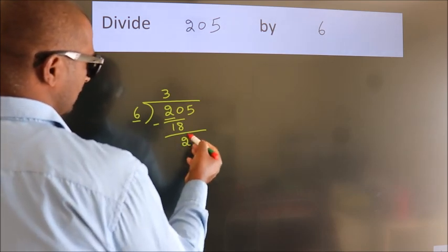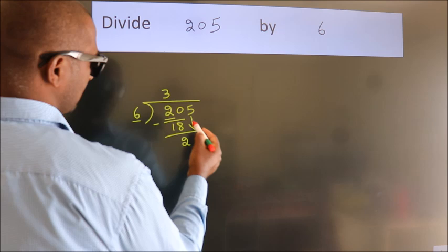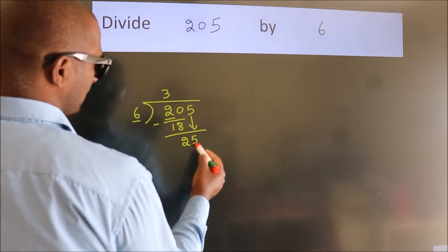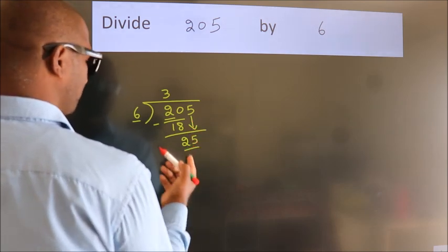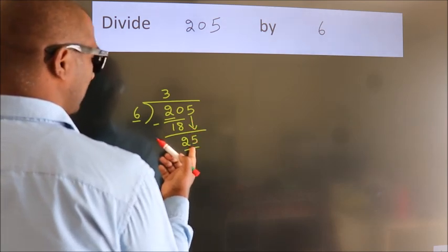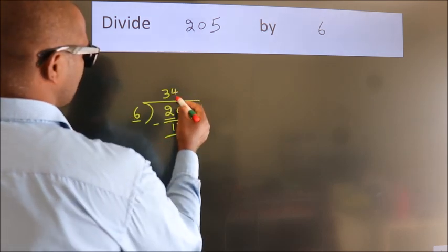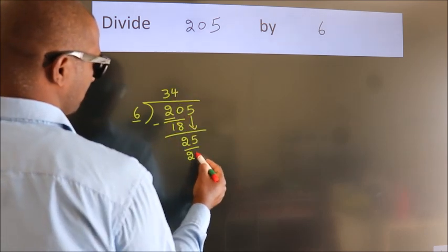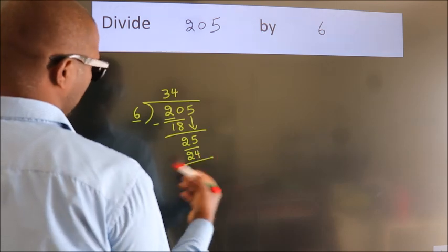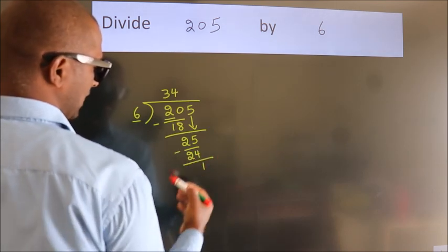After this, bring down the next number. So, 5 down. So, 25. A number close to 25 in the 6 table is 6 threes, 24. Now we subtract. We get 1.